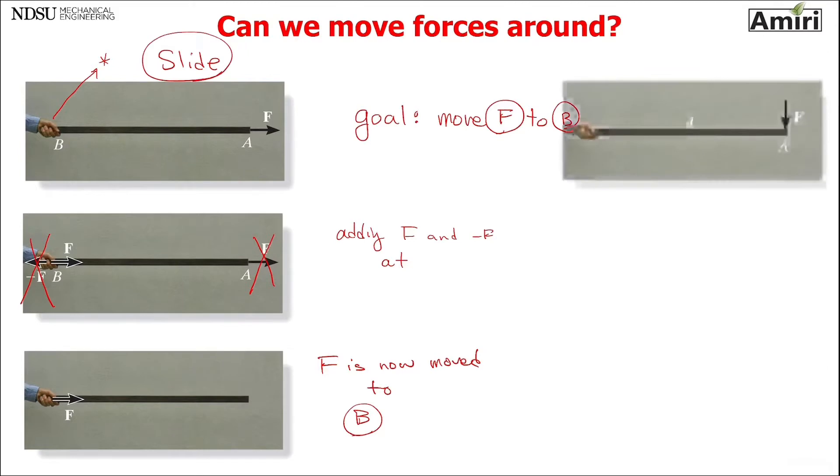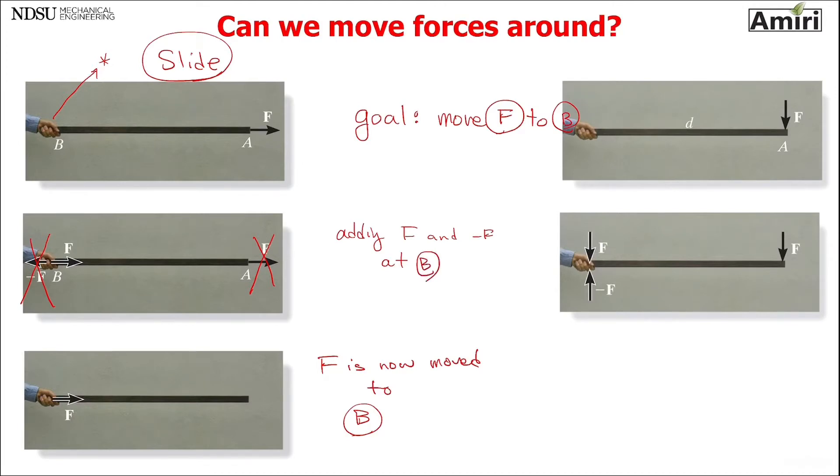Well, what if I have a beam like this? Again, the goal is the same - move force F to point B and see what happens. I'm going to do the exact same thing. Adding F and minus F at B. Can I cancel F and the other F by each other? Can I do it? I want you to think about it for a couple of seconds. Can I cancel those two or no? If you didn't know anything about moments, you probably would have said yes. Just cancel those. F is moved. Done.